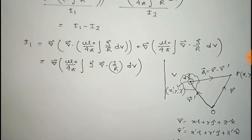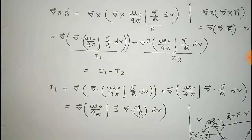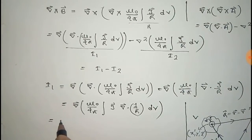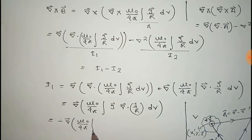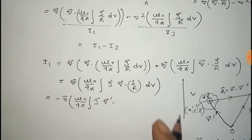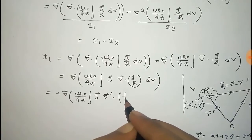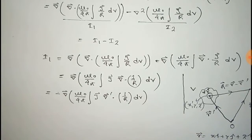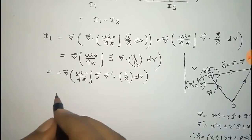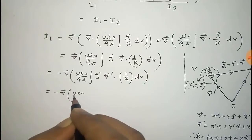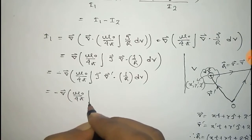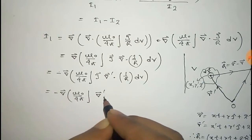So we can put this condition in: it will have a minus sign into nabla of μ₀/4π dot 1/r dv, which equals the integral of nabla-dash dot 1/r dv.